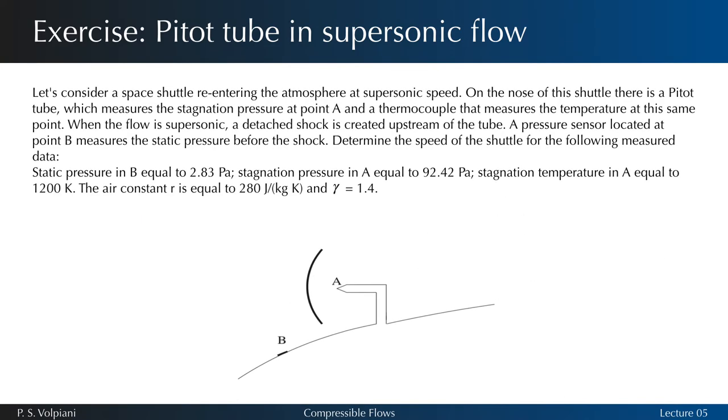Let's consider a space shuttle re-entering the atmosphere at supersonic speed. On the nose of the shuttle there is a pitot tube which measures the stagnation pressure at point A and a thermocouple that measures the temperature at the same point. When the flow is supersonic, a detached shock is created upstream of the tube. A pressure sensor located at point B measures the static pressure before the shock. Determine the speed of the shuttle for the following measured data.